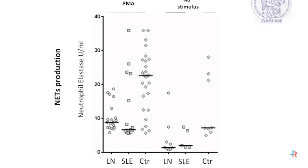We then studied ex vivo NET production by neutrophils — release of elastase and DNA — obtained from normal subjects and patients with lupus and lupus nephritis. Resting neutrophils from all categories were stimulated without stimulus, and after stimulation with phorbol myristate acetate (PMA). In both conditions — no stimulus and stimulation — the release of NETs was lower in neutrophils from lupus nephritis and lupus patients, indicating that there is not an increased production in either condition.